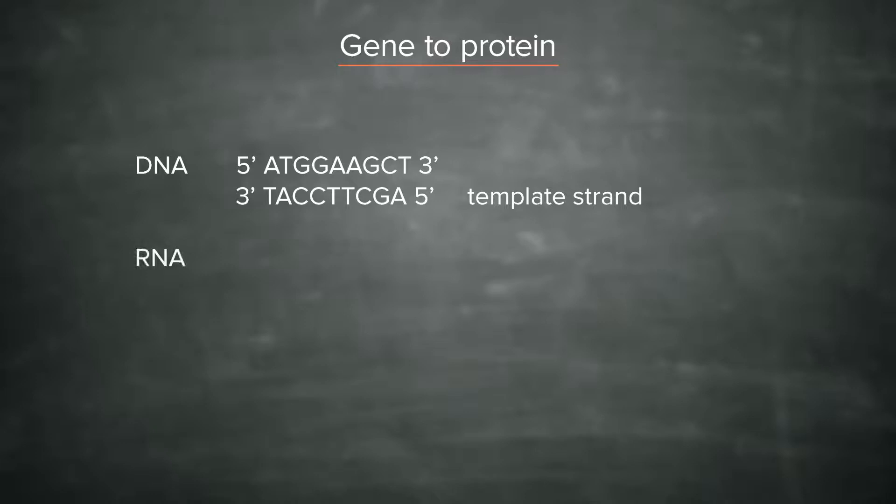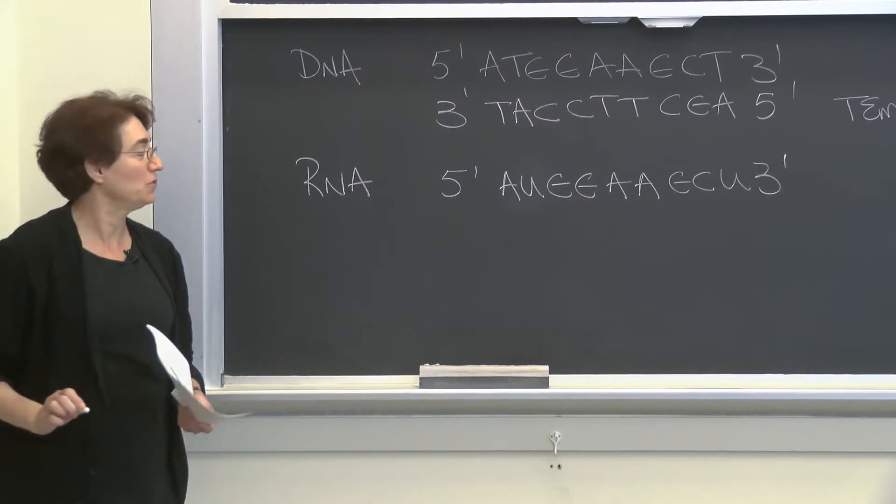The RNA that comes out will be the complement of this template DNA strand. It will be AUG, GAA, GCU. There's a little trick here I want to tell you.